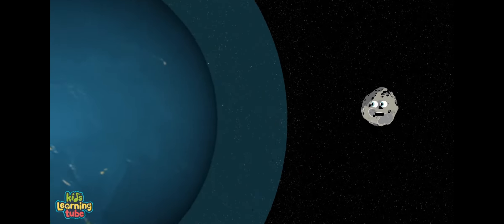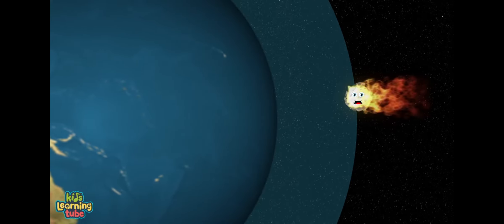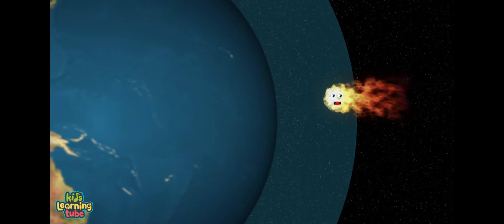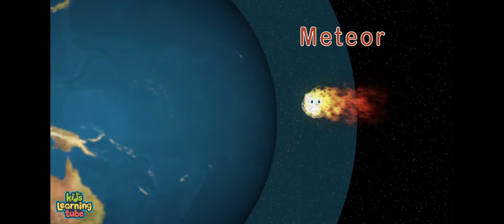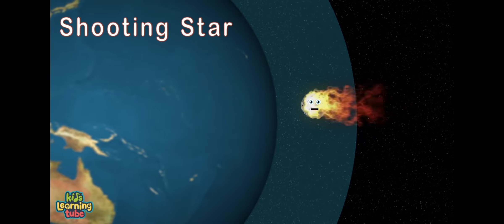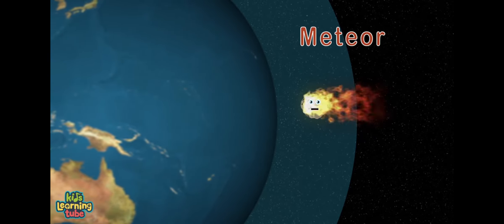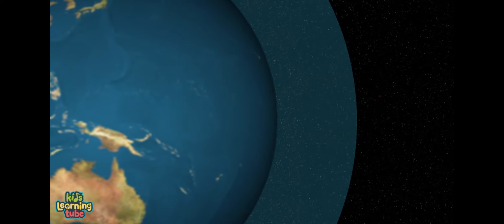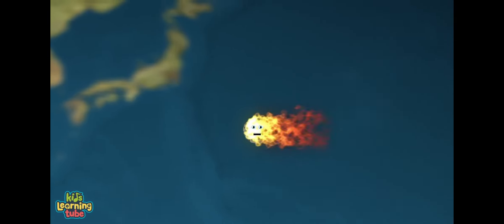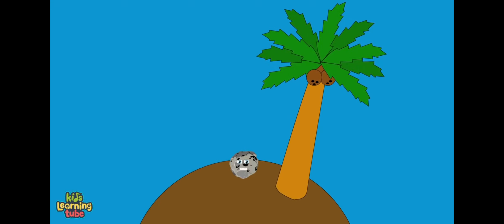If I enter Earth's atmosphere, you'll see a bright tail of light. If this happens and I vaporize, I'm called a meteor. Some call me a shooting or falling star. I'm only called a meteor if I burn up completely. But if I make it through the atmosphere and reach the Earth's surface, my name changes to meteorite.